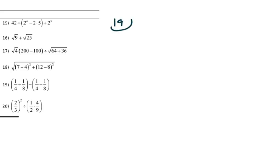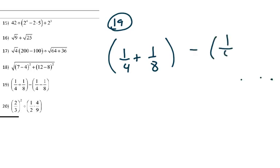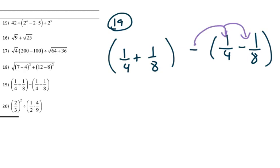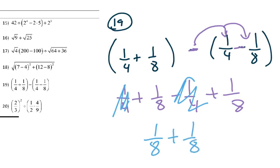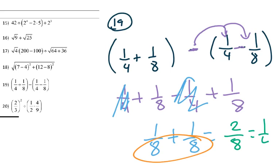Number nineteen involves fractions. We can use distribution here: multiplying through gives us negative one-fourth and positive one-eighth terms. Because negative times negative is positive, the one-fourth terms cancel, and we're left with one-eighth plus one-eighth. Since the denominators match, we add the numerators: 1 plus 1 is 2, so we get 2 over 8, which reduces to one-fourth.